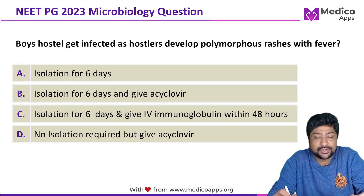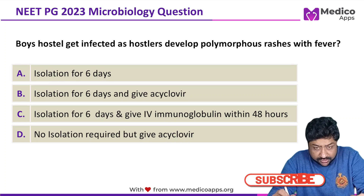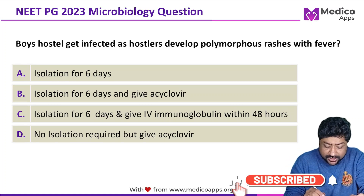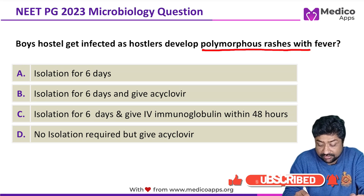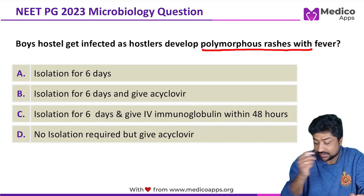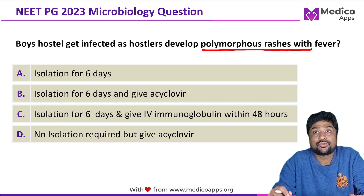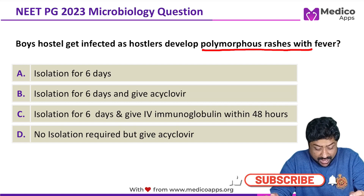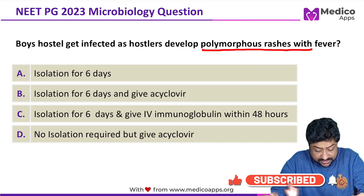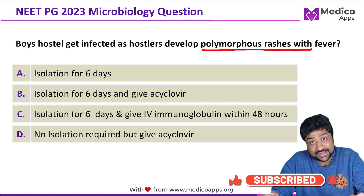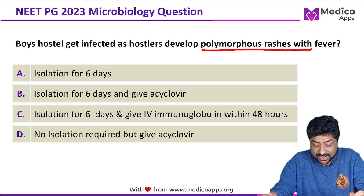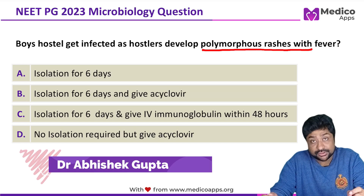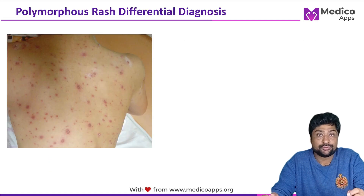This question appeared in NEAT PG 2023. A group of boys in a hostel develop polymorphous rashes. The question asks what is the next step. Options are: isolation for six days; isolation for six days and give acyclovir; isolation for six days and give IV immunoglobulin within 48 hours; or no isolation required but give acyclovir.